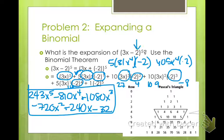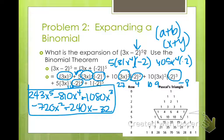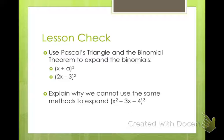That is using the binomial theorem when there's a numeric value in your terms instead of just variables like a plus b or x plus y. The binomial theorem also handles a numeric value as your second term rather than just variables. For the lesson check, use Pascal's triangle and the binomial theorem to expand the two given expressions. Then explain why you cannot use the same method to expand x squared minus 3x minus 4, all raised to the 3rd power — discuss this with your partner, and I want to see the discussion on Monday.